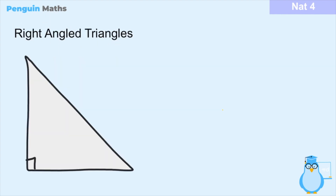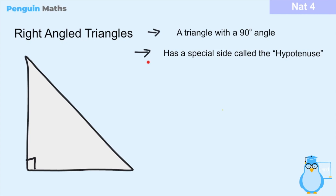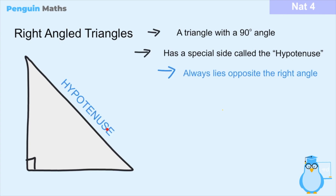So, right angle triangles. We know that a right angle triangle is simply a triangle with a 90 degree angle like this one here, and just like any triangle a right angle triangle has three sides. One unique thing about a right angle triangle is that it has a special side called the hypotenuse. The hypotenuse in a right angle triangle always lies opposite the right angle, as we can see in this diagram.